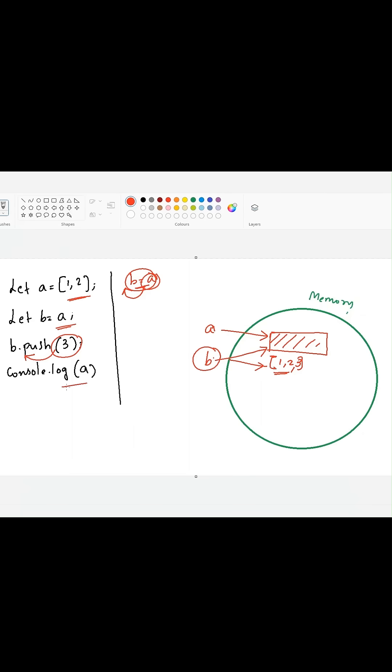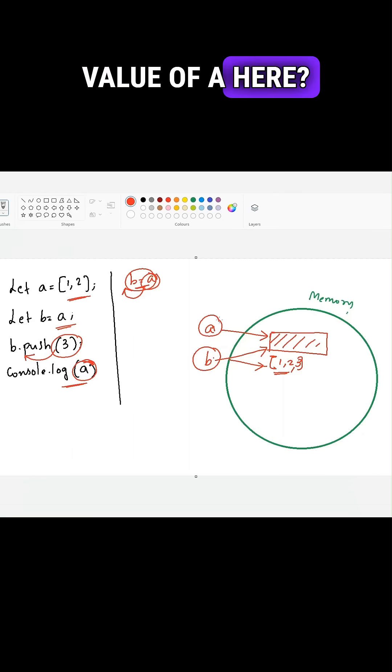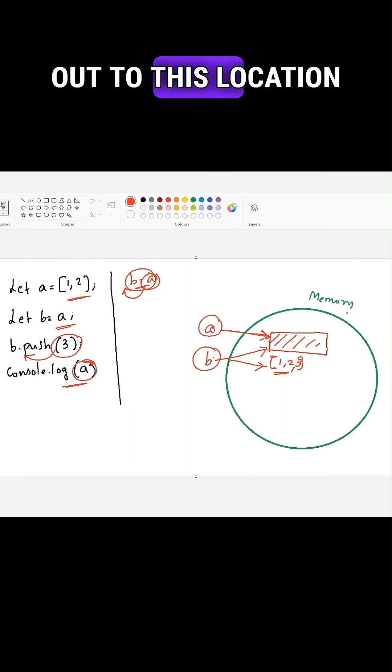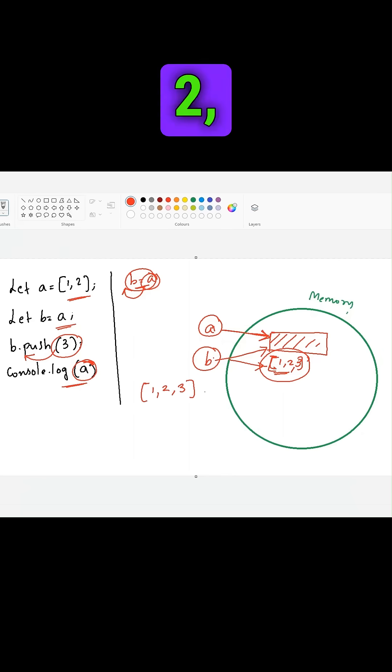In the fourth line, we are logging the value of A into the console. So what is the value of A here? A is pointing out to this location in the memory, which has the value one comma two comma three. So this will be logged into the console. That is one comma two comma three.